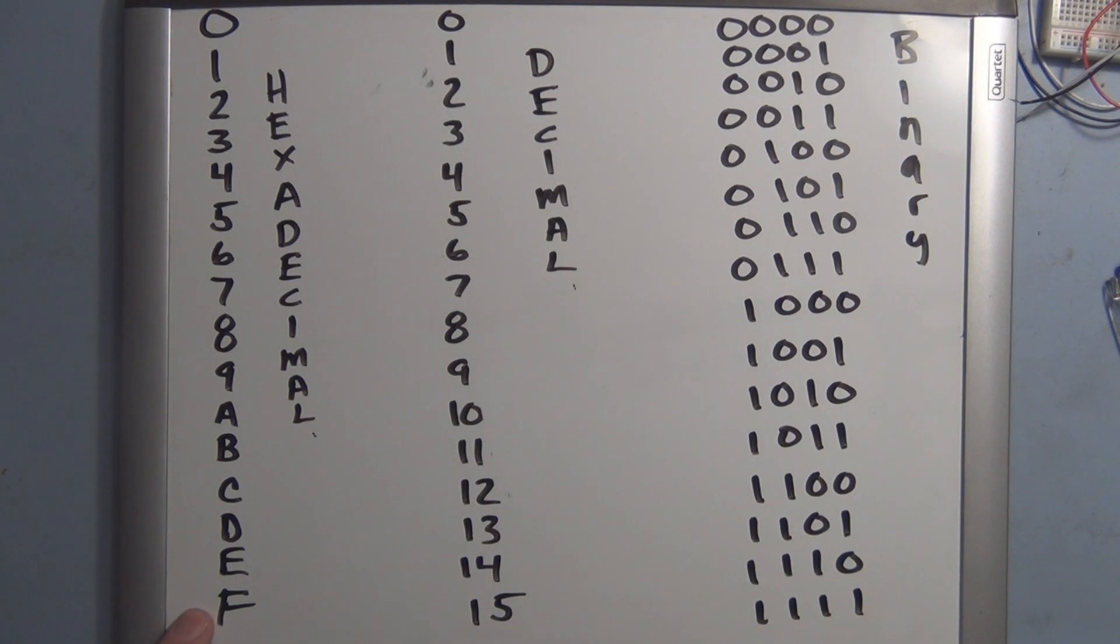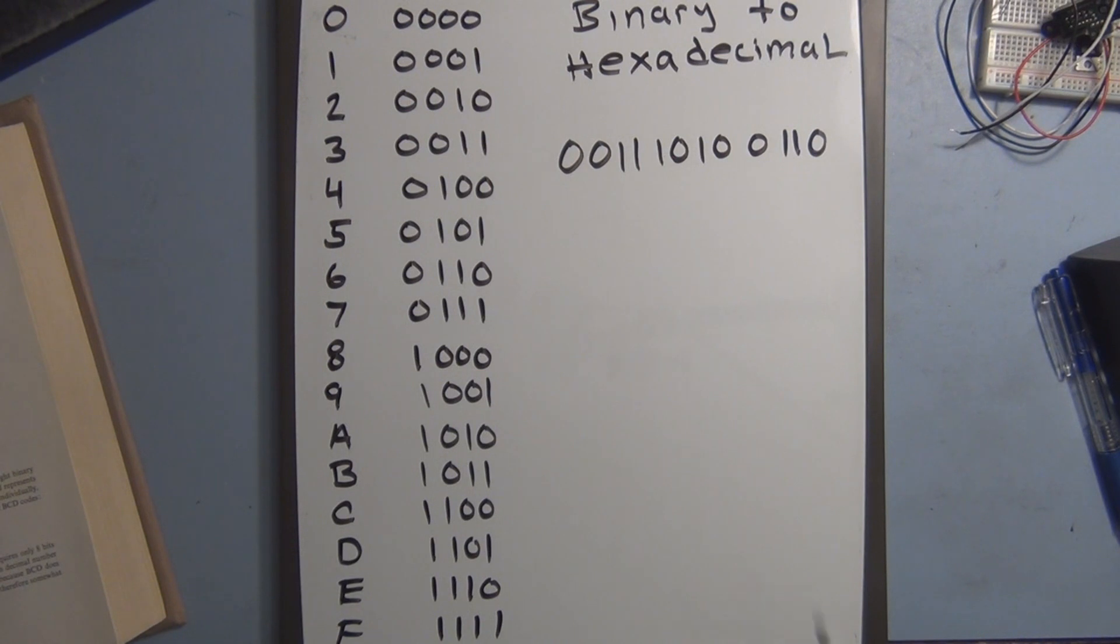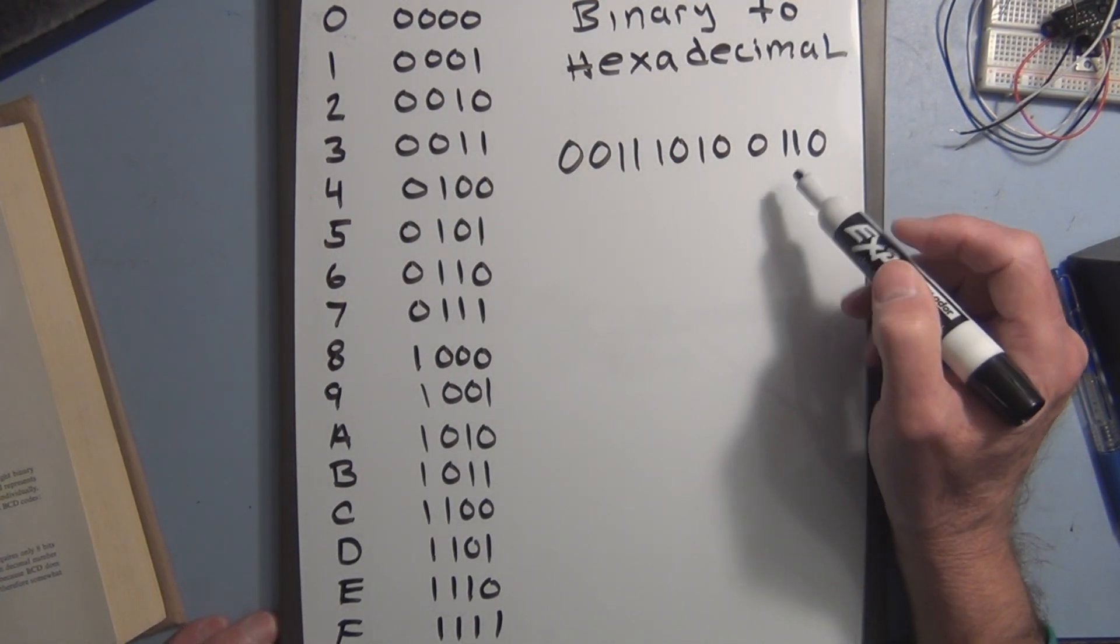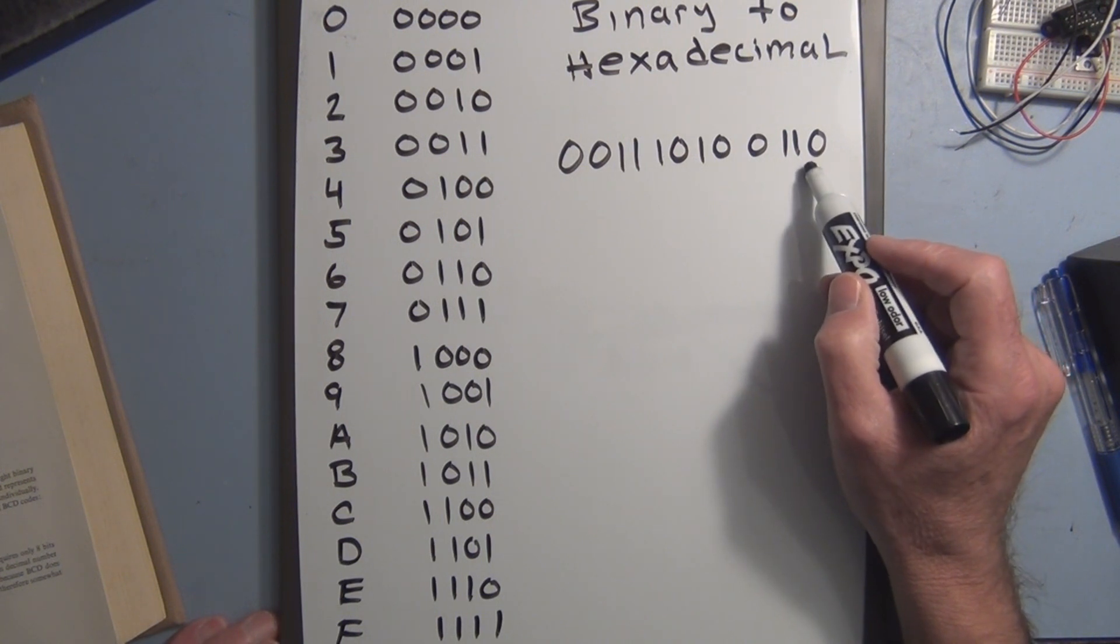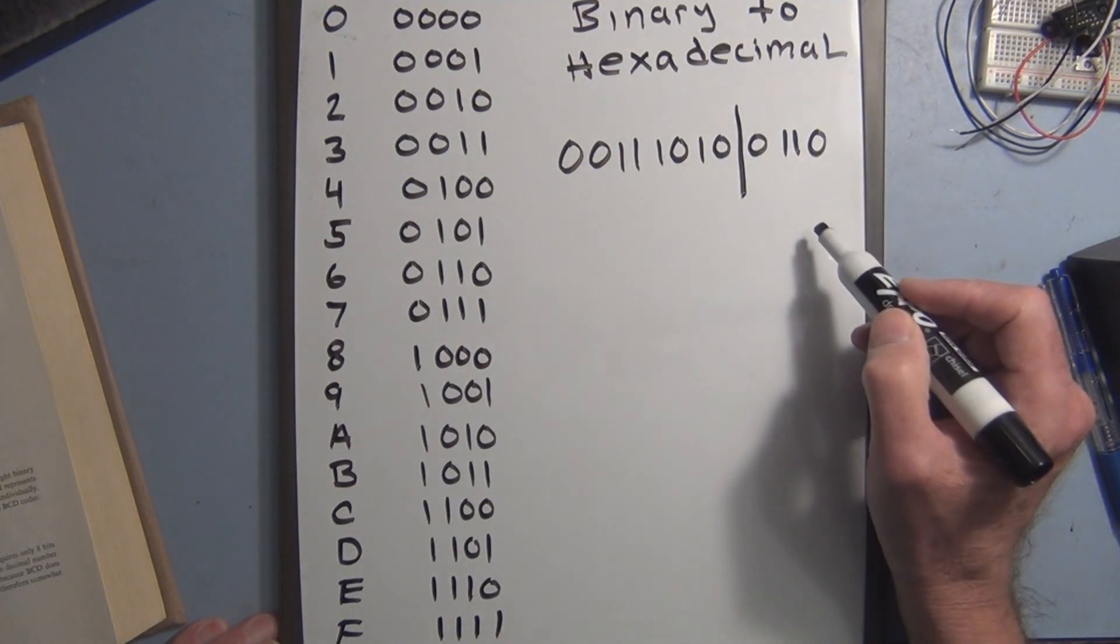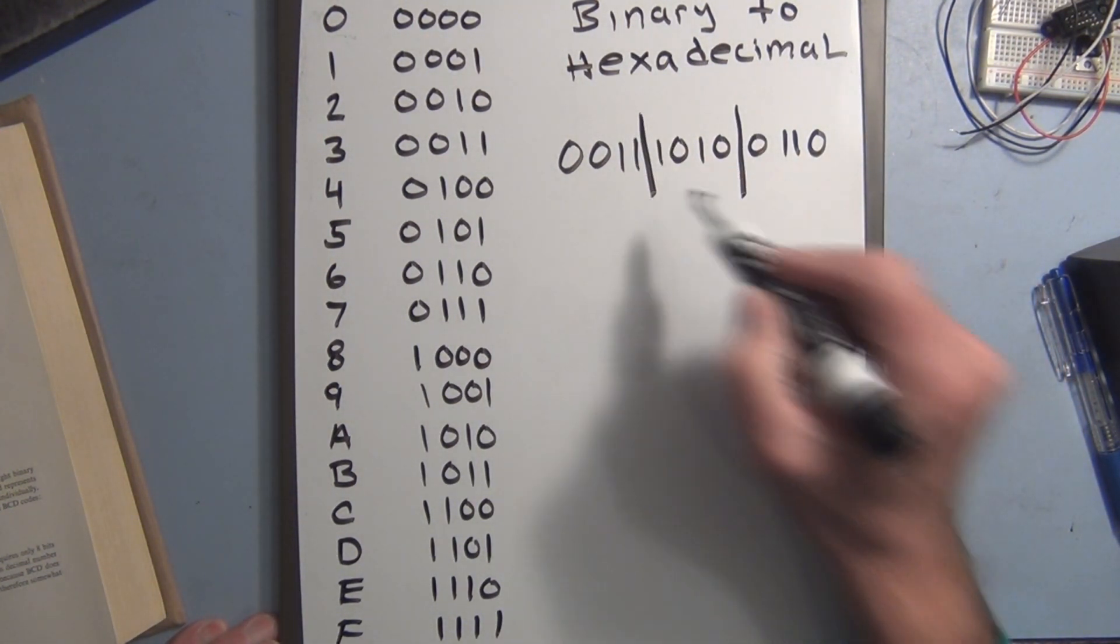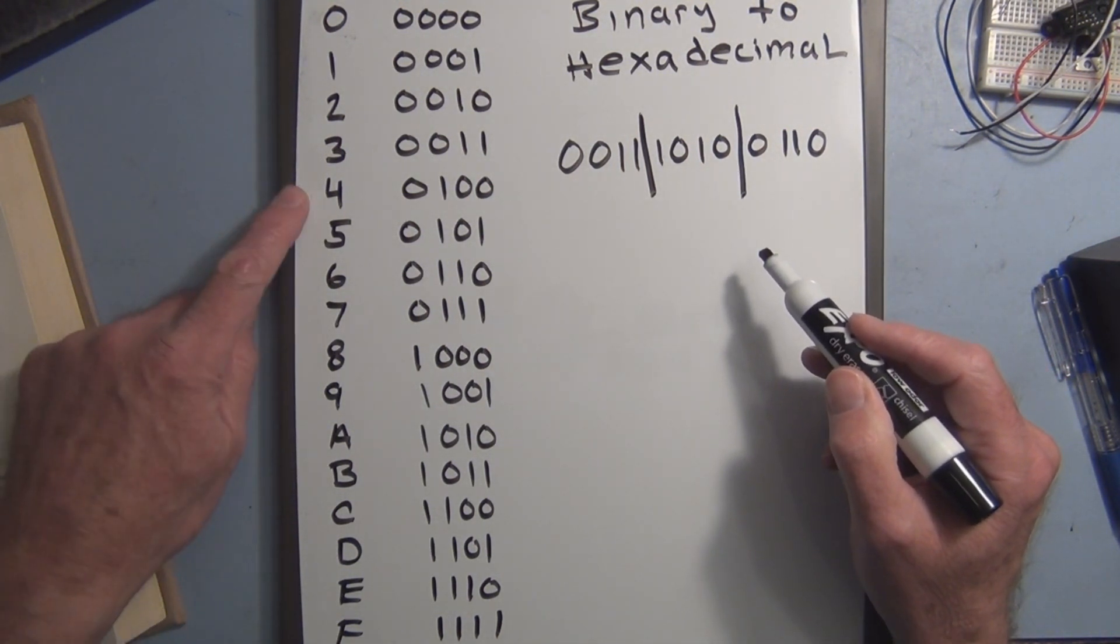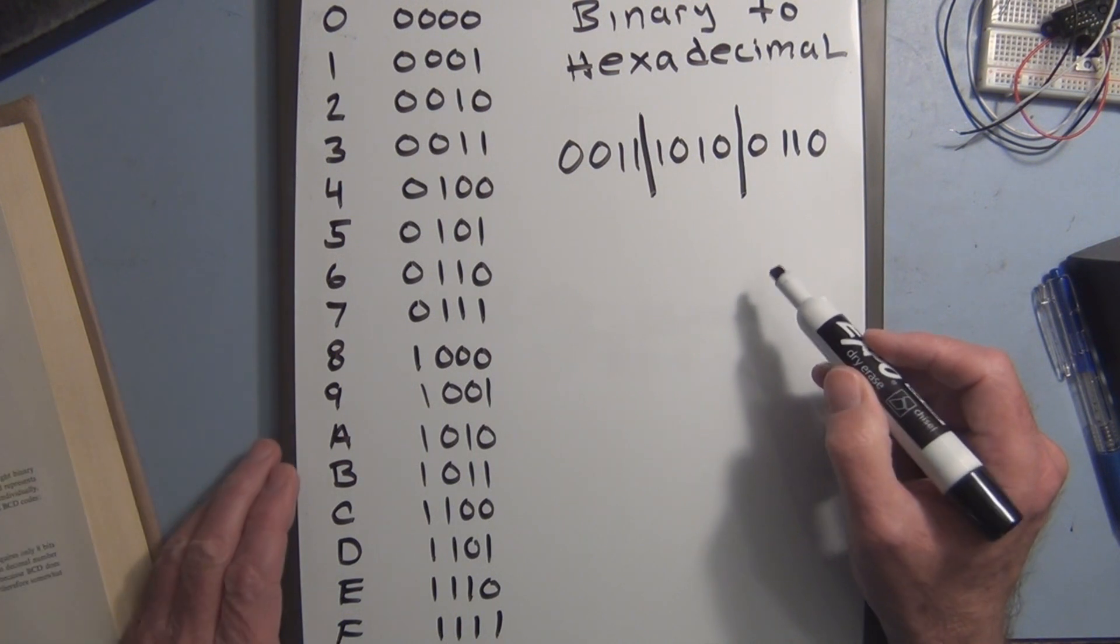binary equivalent requires 4 bits. So F would be 1111 in binary. Now the great thing about binary to hexadecimal conversion is now we just group the binary number in groups of 4 bits. So we have 4 bits here, 4 bits here, and then we convert these groups individually into the corresponding hexadecimal number.